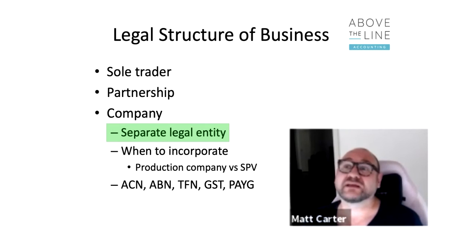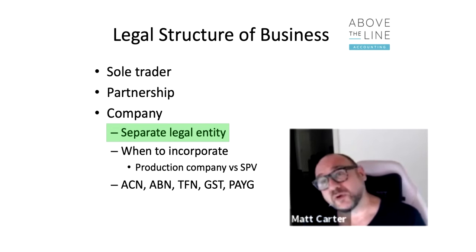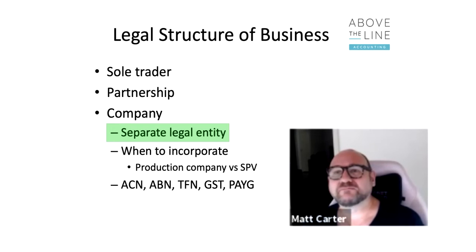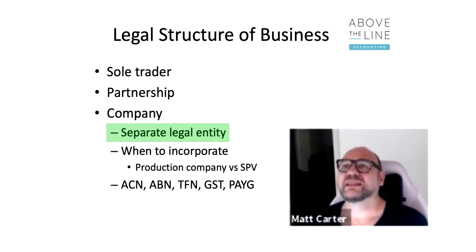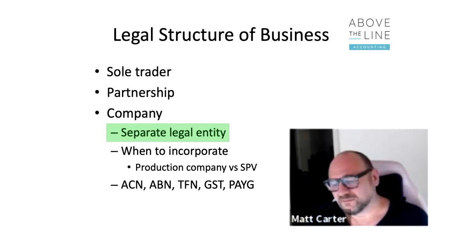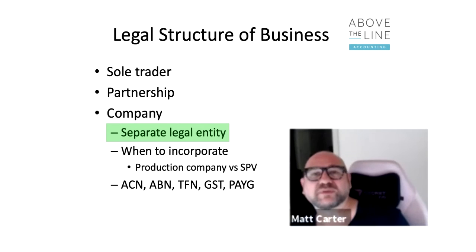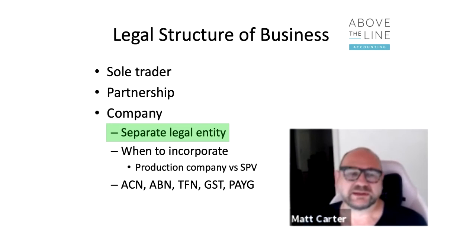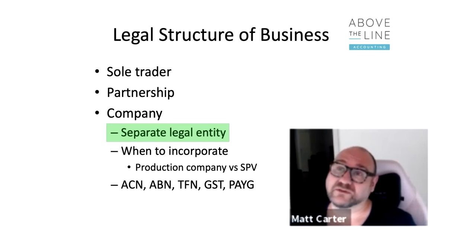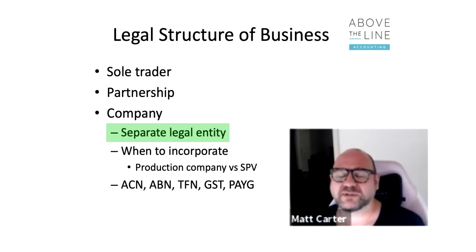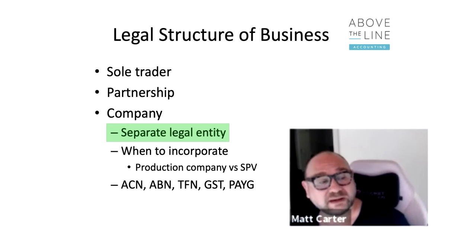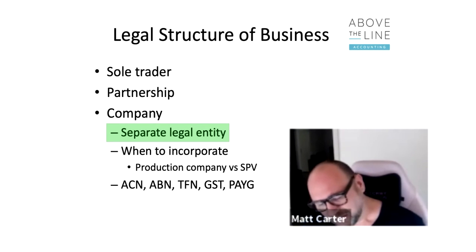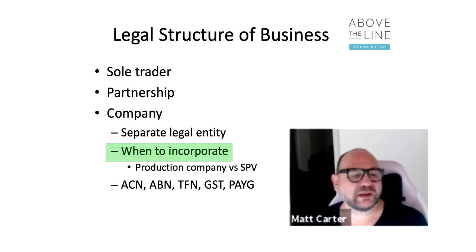If you're not producing but running a business as, say, a gaffer or grip, a key question is how much income you should be earning to justify forming a company. If you're earning twenty thousand dollars a year, setting up a company can be quite expensive, so you'd need to weigh costs against benefits. But if you're a sole trader turning over two or three hundred thousand dollars, the question is why aren't you a company? There's a general range — somewhere between eighty thousand and one hundred and twenty thousand dollars — where it starts to make sense, though it always depends on your circumstances.